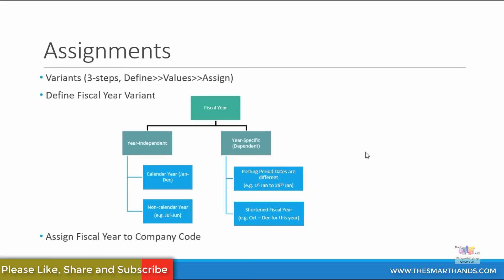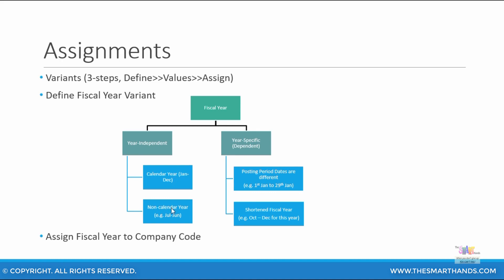In this presentation, we saw what a variant is and how a variant can be used — it's a three-step process. We created a fiscal year variant: we used existing variant K4 for January to December, and we created our own fiscal year variant Z6. We defined the variant, assigned values saying it goes from July to June with the necessary months and fiscal year shifts, and then assigned this variant to the company code. We also saw the different types of fiscal year available — year independent, which is the most commonly used, and year dependent. Year independent can be either calendar year or non-calendar year. Please remember: create your own fiscal year variant and then assign your fiscal year variant to your company code.